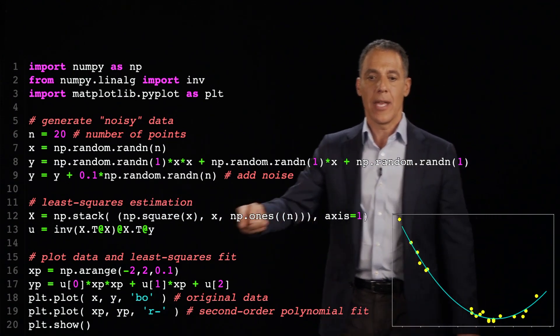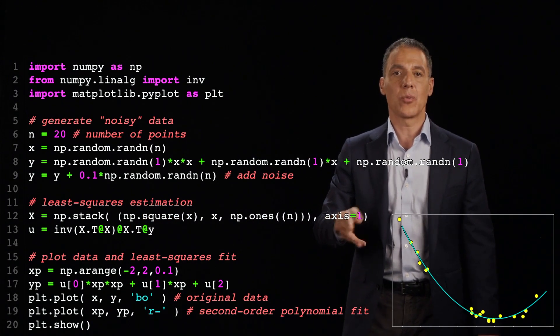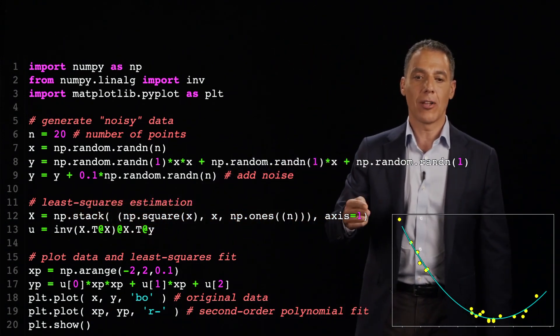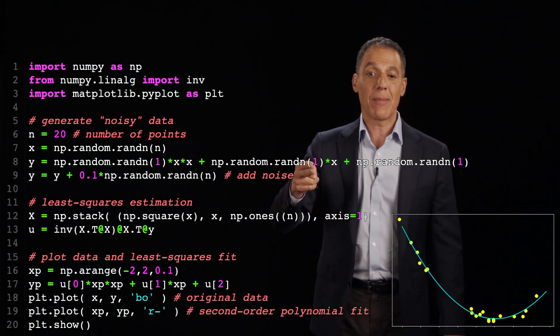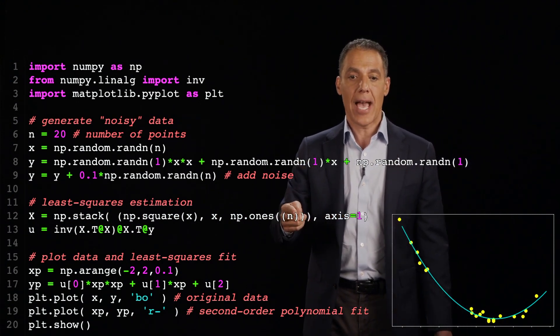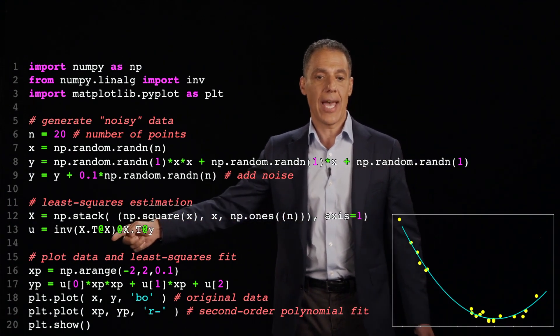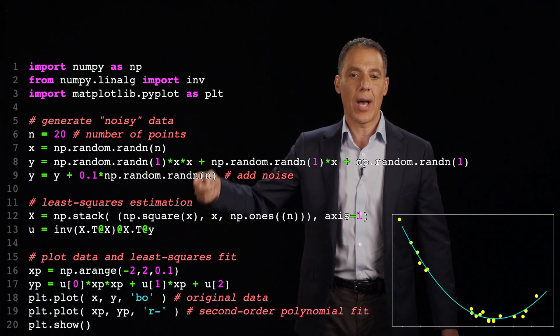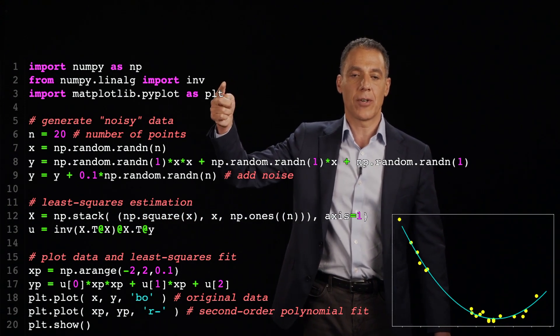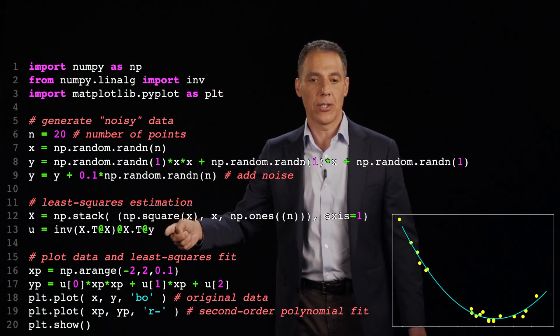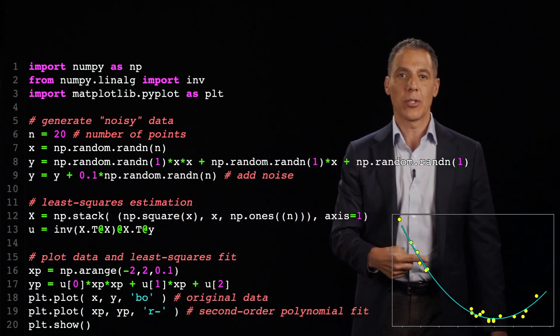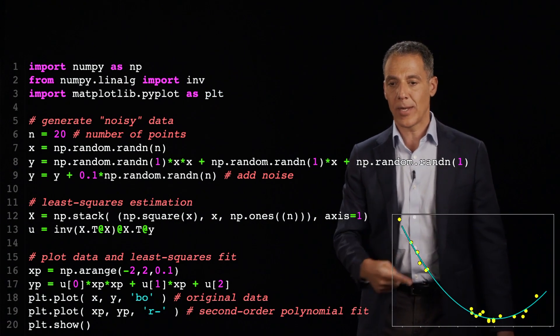So I've got X squared, X and one, and I'm going to pack those into the, this axis equals one says to put them into columns. So this matrix now is all of my X terms. I've already got my vector of Ys. I don't have to rebuild that. And now I've got my least square solution. It's X transpose X inverse times X transpose times Y. I, of course, imported inverse from NumPy Lin Algebra here. And now I'm going to simply plot the data points and I'm going to plot the fit so I can see what's going on. And you can see you get this nice fit.